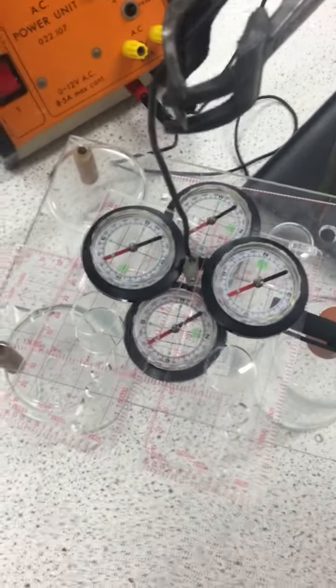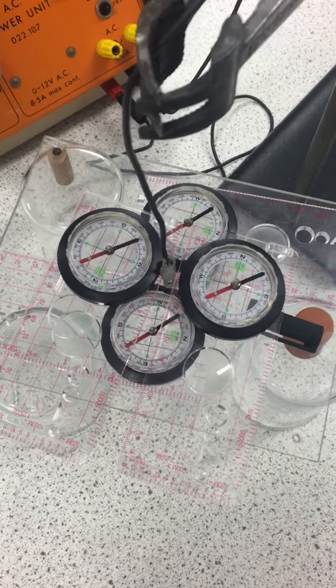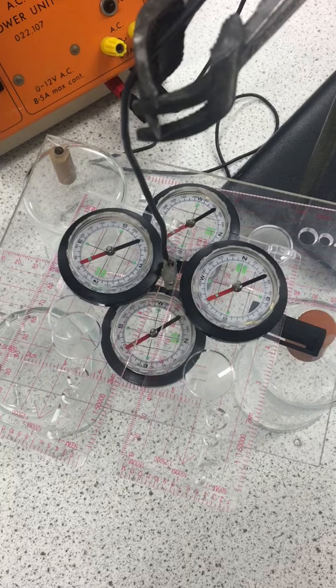I'm going to give it about 10 seconds, and then we'll do the same thing one more time to show that the current flowing through the wire is creating a magnetic field around the wire.